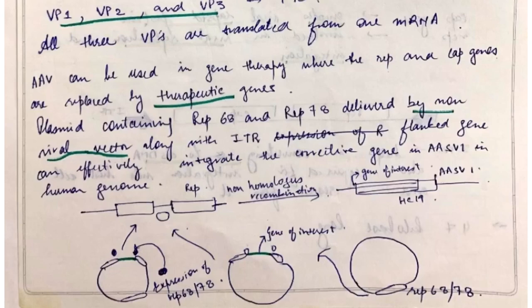I have below shown the diagram of how plasmid containing Rep 68 and Rep 78 is delivered by non-viral vectors along with ITR flank gene and can integrate into the corrective gene of the adeno-associated virus in human genome. The insert size for adeno-associated virus can be 4.5 kilobase long that has an advantage of long-term gene expression.